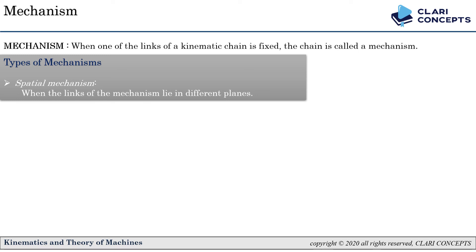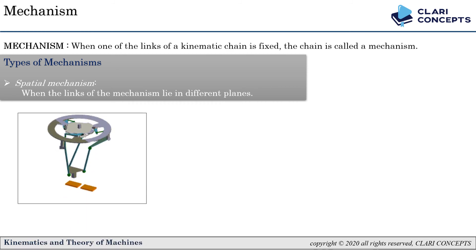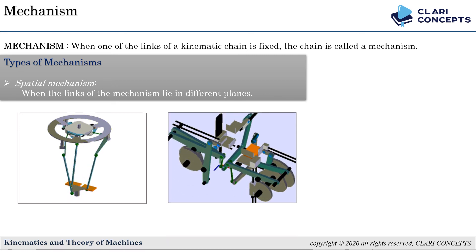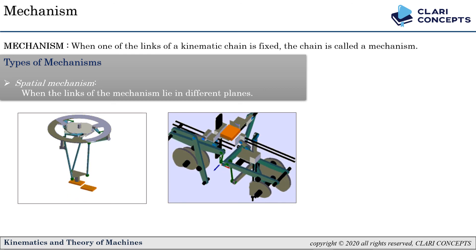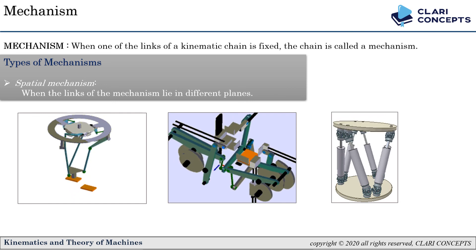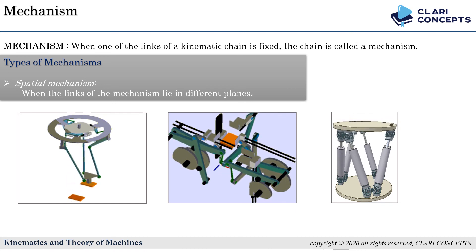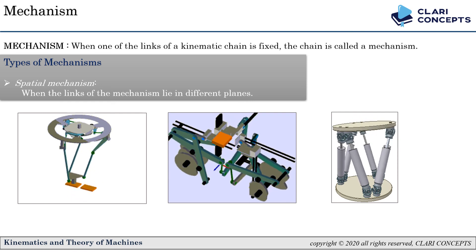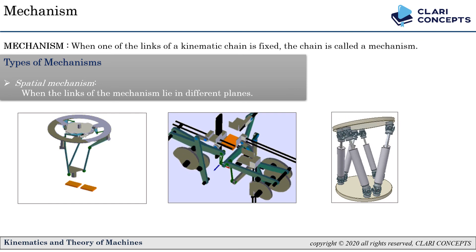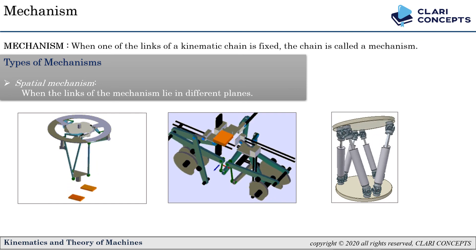Finally, a special mechanism is one where the links lie in more than one plane. In these examples, all motions are not in a single plane — the object is handled across multiple planes, making them special mechanisms. In the syllabus of Kinematics and Theory of Machines, we will not study special mechanisms; we will restrict our study to planar mechanisms only.